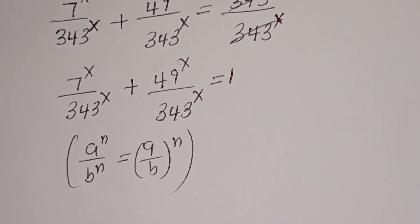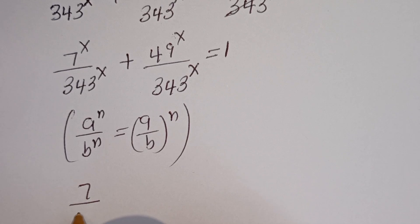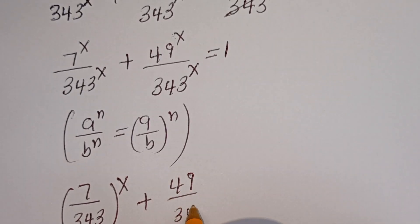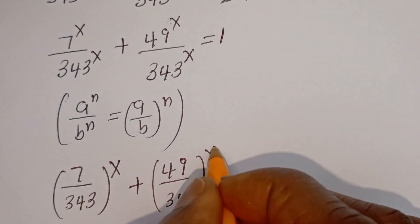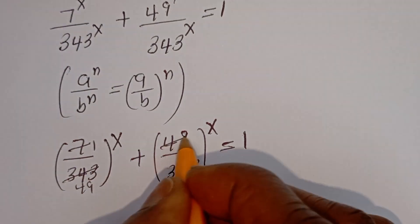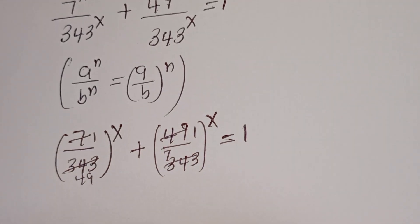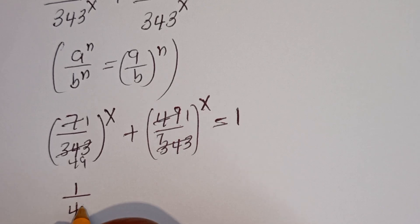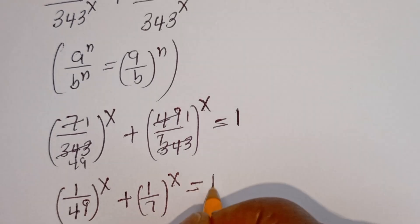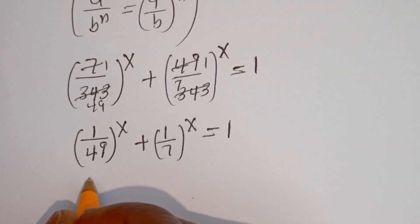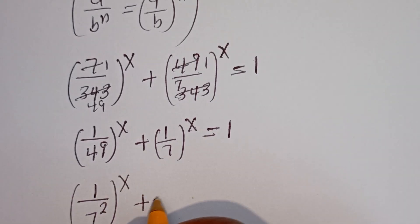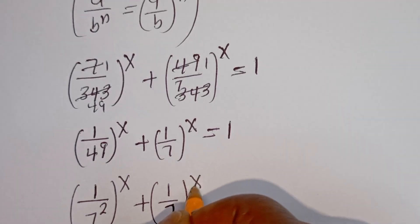So applying this rule, 7 over 343 to the power of S plus 49 over 343 to the power of S is equal to 1. This simplifies to 1 over 7 squared to the power of S plus 1 over 7 to the power of S is equal to 1.